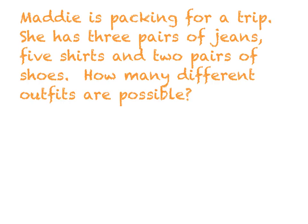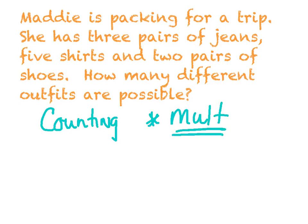Alright, Maddie is packing for a trip. She has three pairs of jeans, five shirts, two pairs of shoes. How many different outfits are possible? So we could sit here and draw a tree diagram out to represent all of this. Or we could use that fundamental counting principle. And remember, that just said, take all your possibilities and multiply. Okay? So let's just run through that again.